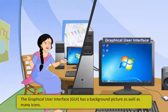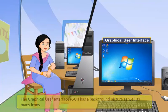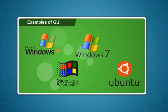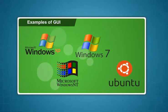A graphical user interface has a background picture as well as many icons. Examples of GUI are Windows XP, Windows NT, Windows 7, and Ubuntu.